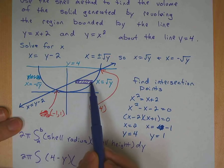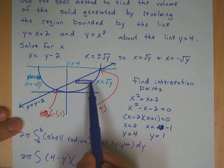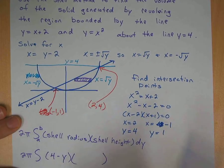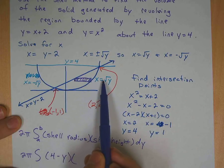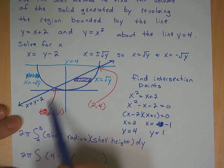And now we have to think about what our shell height is. So the shell height is the distance between here and here. What's this shell height? Now here's the issue with this problem. Here's where it gets a little more complicated.